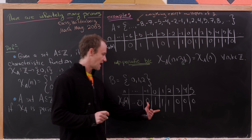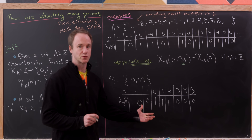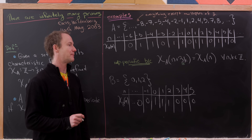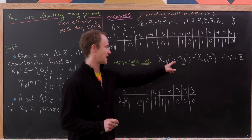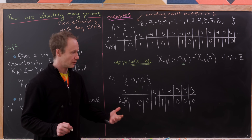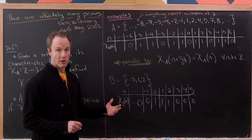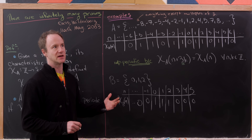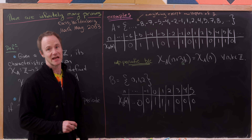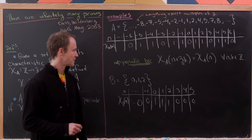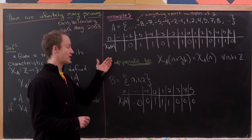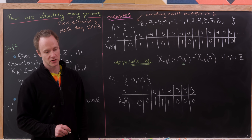That's because if a 1 appears once, it has to appear infinitely many times for the function to be periodic — we would need some repeating pattern. And similarly, 0 would also have to appear infinitely many times. In this finite set case, the 1 does not appear infinitely many times. So we've seen an example of a periodic function and a non-periodic function.